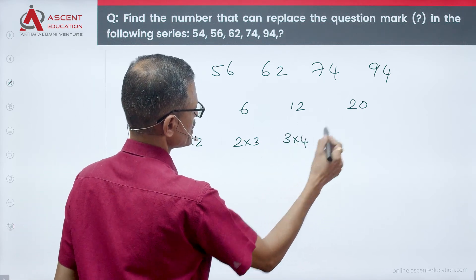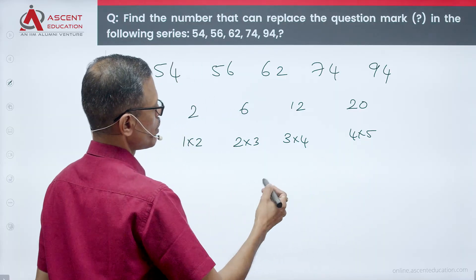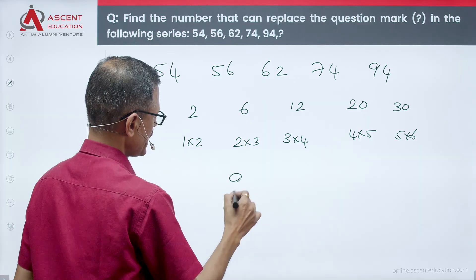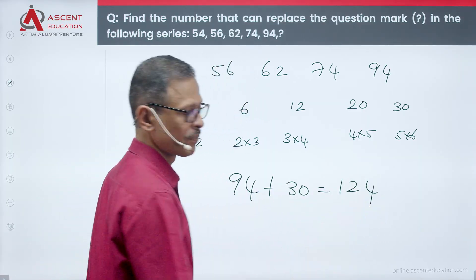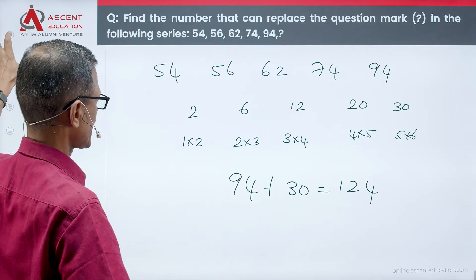So if you want to add what we are going to add, it should be 5 into 6. So 5 into 6 is 30. Add 94 plus 30 equals 124. That should be the next number in the series. If you want to add the choice, Choice C is the correct answer to this question.